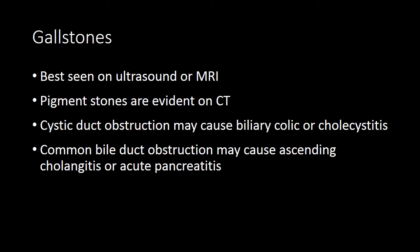In summary, gallstones are best identified using ultrasound or MRI. If evaluating a patient with right upper quadrant pain on CT, you may see pigmented gallstones, but cholesterol stones may not be evident. When a gallstone intermittently obstructs the cystic duct, it causes biliary colic; if lodged in the cystic duct, it may cause acute cholecystitis. If it passes into the common bile duct causing obstruction, you may have right upper quadrant pain; if associated with fever and jaundice, that's diagnostic of ascending cholangitis; and if associated with elevated lipase, the patient likely has acute pancreatitis.